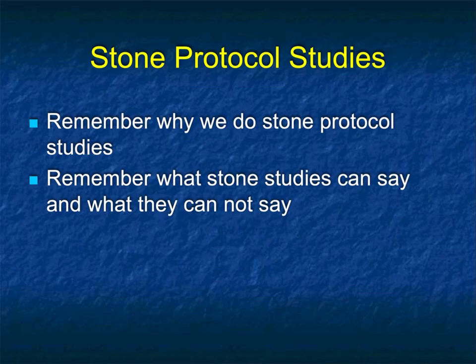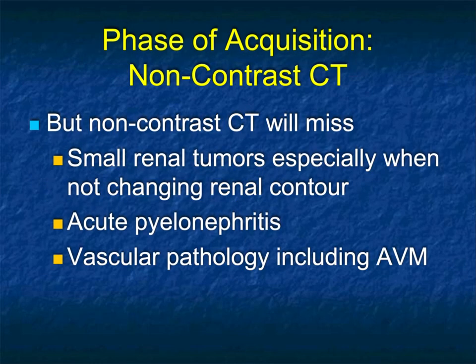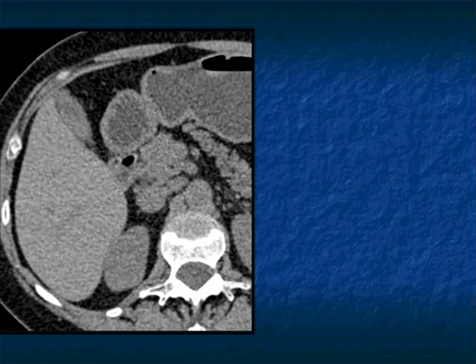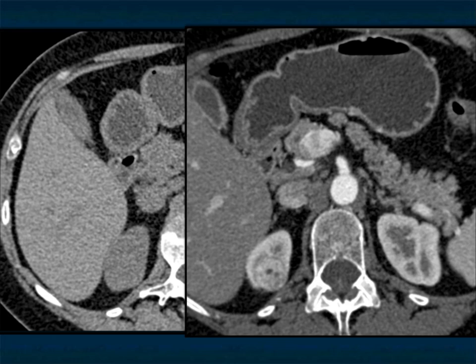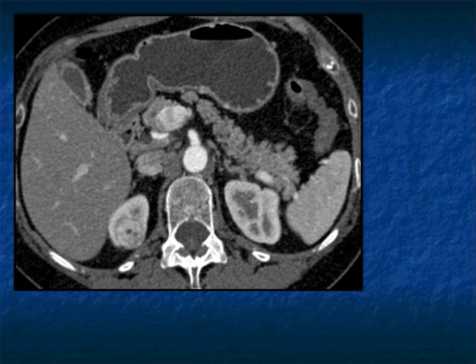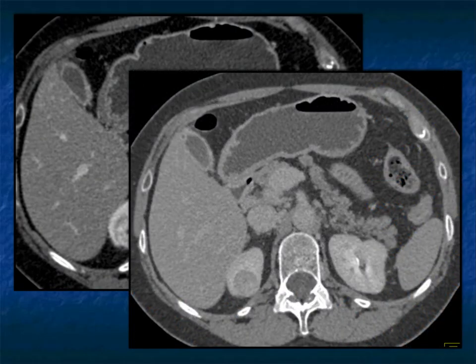Non-contrast scans rule out stones in the kidneys, ureter, or bladder, but do not infer that the kidney is normal if you don't see a mass on a non-contrast study. Non-contrast CTs miss renal tumors, pyelonephritis, and vascular pathology. Here's a case: the right kidney looks pretty good on non-contrast, but when you give contrast, there's a 2-centimeter mass in the kidney — a renal cell carcinoma. The patient had a partial nephrectomy and did great. If you only had the non-contrast, you would have missed the tumor when it was imminently resectable.